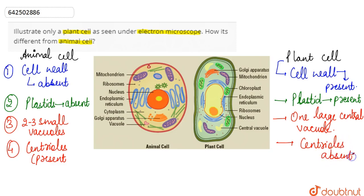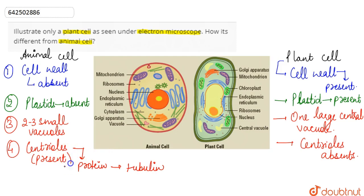Centrioles are cylindrical organelles composed mainly of a protein called tubulin. This cell organelle which contains the tubulin protein is found to be present in case of the animal cell and absent in case of the plant cell. So these are the differences between animal cell and the plant cell.